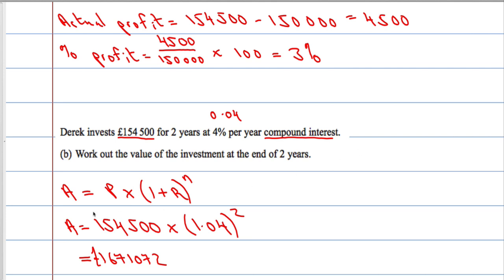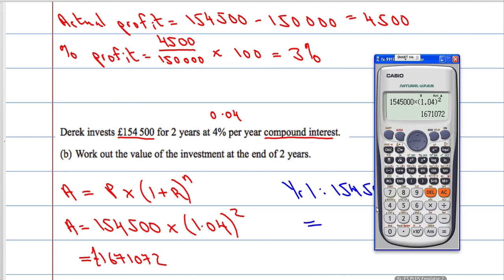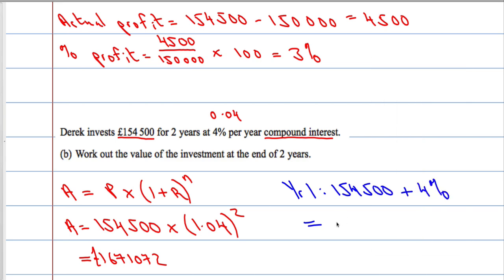Just to maybe clear that up in case you didn't understand this formula, it's handy if you know this formula. If I just write down after year one, he will have £154,500 plus 4%, so £154,500 plus 4%. So I'm increasing by 4%, multiply by 1.04. That gives me £160,680.